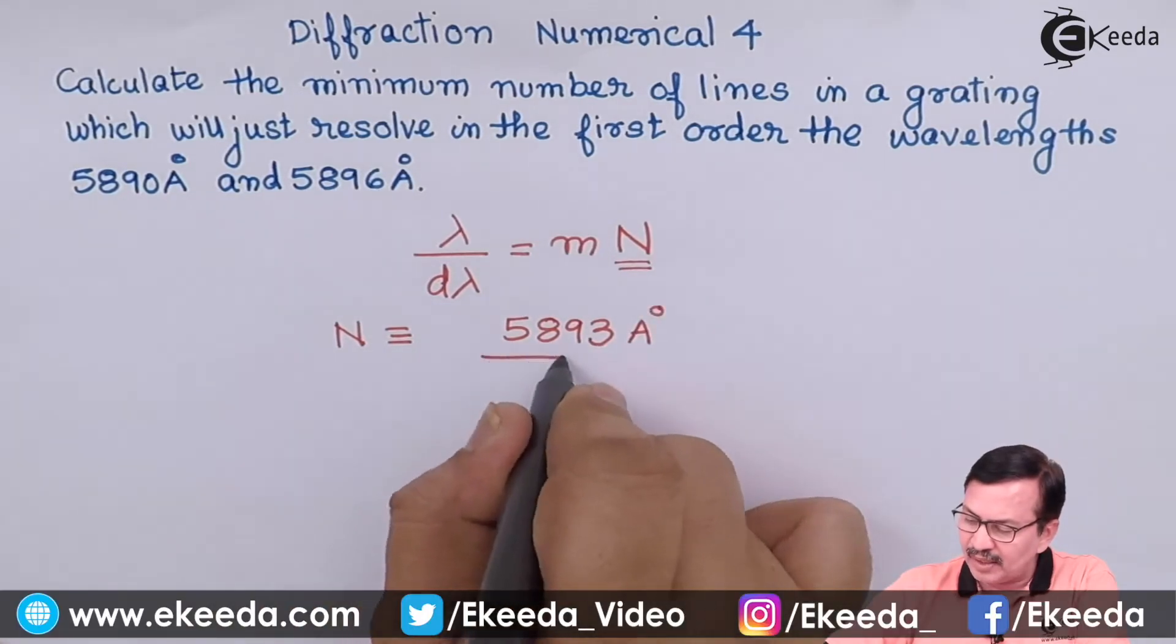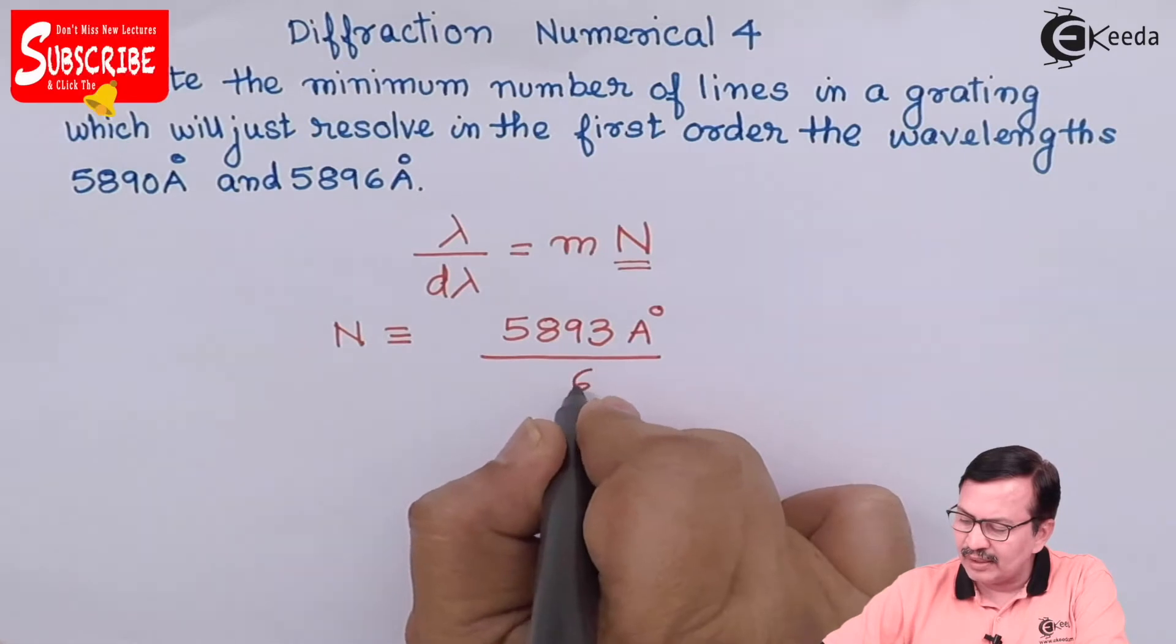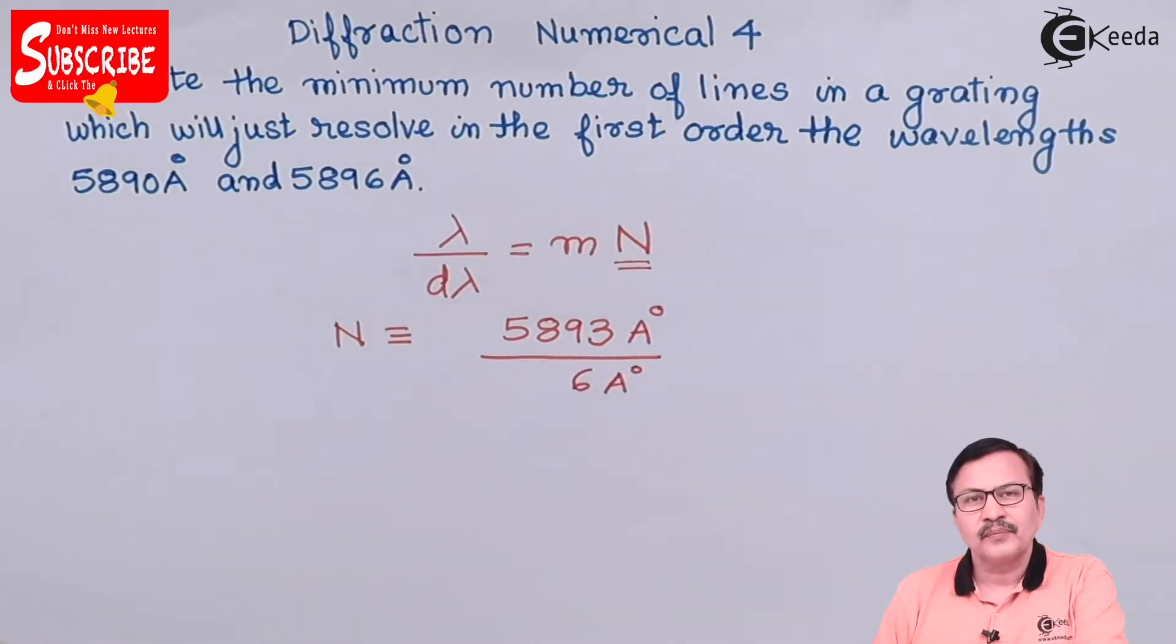This is then divided by d lambda, which is the difference between the two wavelengths that has been given to you, which is 6 angstroms.